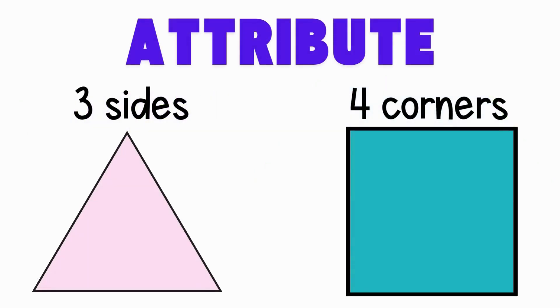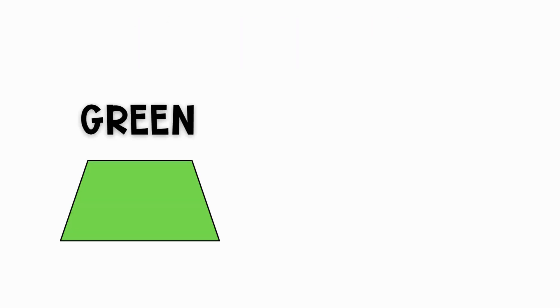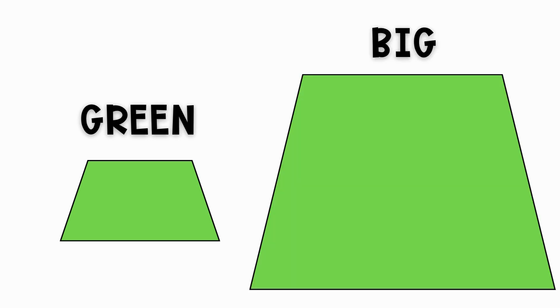An attribute is something we can use to describe a shape, like how many sides it has or how many corners it has. Say, attribute. Let's learn a little more about the word attribute. Color is an attribute because an attribute is any word you can use to describe an object. Size is an attribute too.